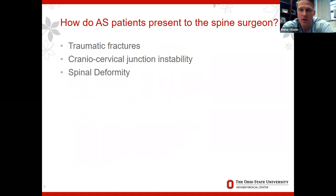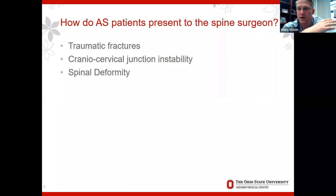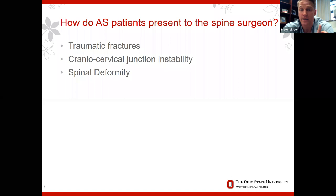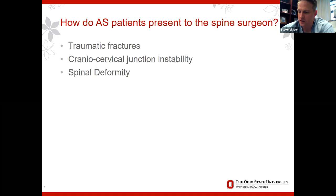How do these patients typically present to the spine surgeon? Really three main things: traumatic fractures — which is what most of us will see at some point — cranial cervical junction problems, where as the spine fuses the occipital cervical joint develops instability, and then worsening spinal deformity as disease progresses. Patients can present with a chin-on-chest deformity or flat back deformity with sagittal malalignment. I'll now transition to some cases — please stop me and ask questions as we go.